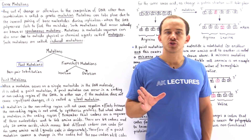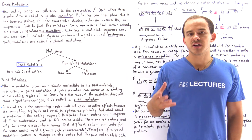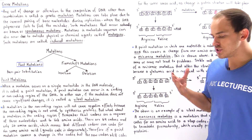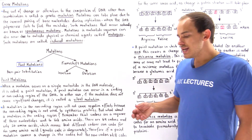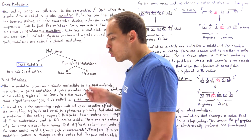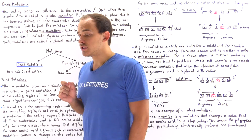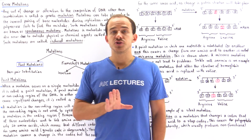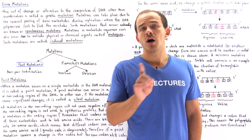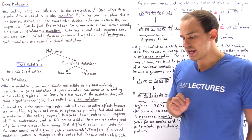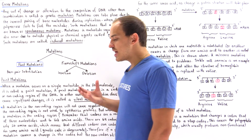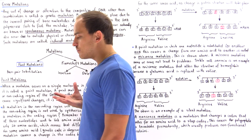In the next several lectures, we're going to discuss the concept of a genetic mutation. Any sort of change or alteration to the composition of a DNA molecule other than genetic recombination is known as a genetic mutation.